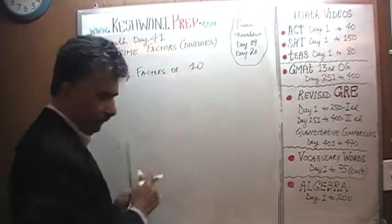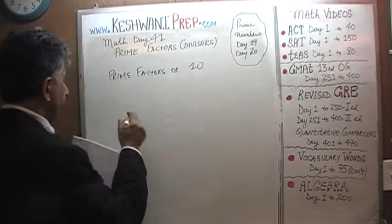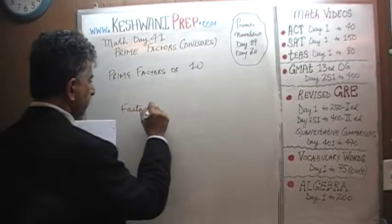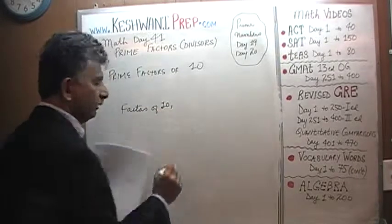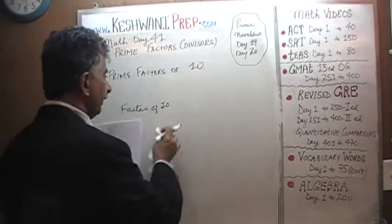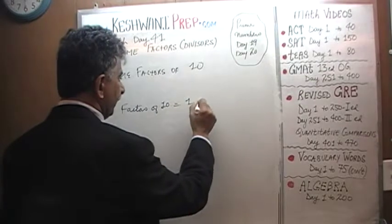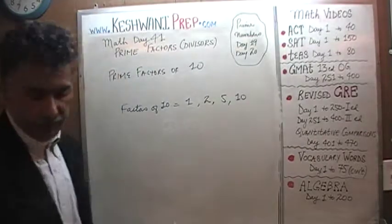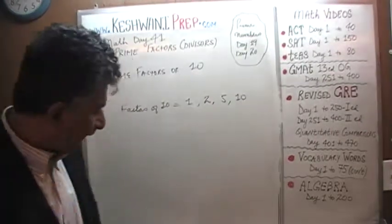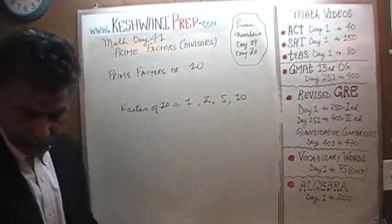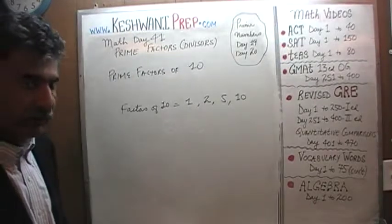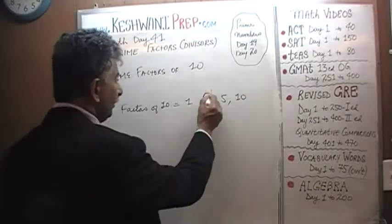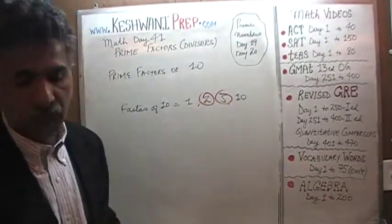Let's do prime factors of 10. The factors of 10 are all the numbers we can divide 10 evenly into: 1, 2, 5, and 10. These are the factors of 10. The prime factors of 10 — once we have the full list of factors — we simply locate the prime numbers out of those, and that's 2 and 5. Those are the two prime factors of 10.